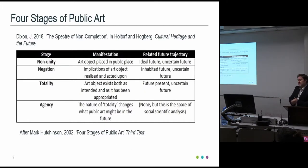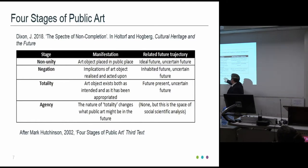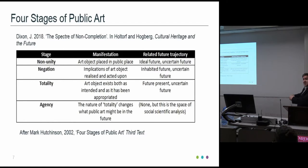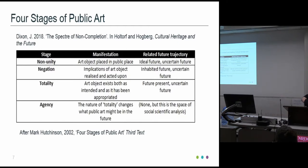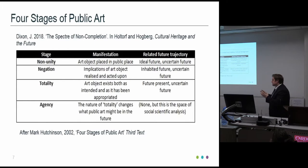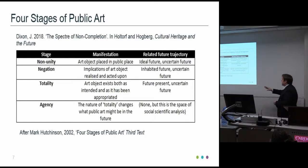Thinking about the future in public art, I used a lot of writing by Mark Hutchinson in his article Four Stages of Public Art. He sees that there are a series of things that happen with any artwork that gets put into the built environment. You first get non-unity, when a new thing is placed into an existing location. There is negation, as the implications of the art object are realised and acted upon — e.g. people don't like it. There's totality, where these things take on their own lives. And then finally there's agency, where all of this comes together and changes what art can be in the future.